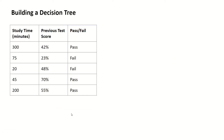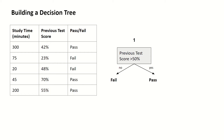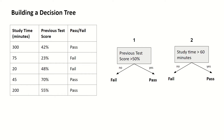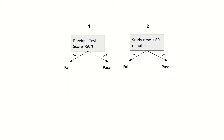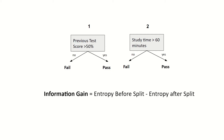So how do we build a decision tree? Let's take a look at two simple decision trees. First: do they have a previous test score larger than 50%? If yes, they pass; if no, they fail. And for the second decision tree: do they have a study time larger than 60 minutes? If yes, they pass; if no, they fail. In order to figure out which of these decision trees is better, we can look at what's called information gain, which is calculated by the following formula: information gain equals entropy before the split minus entropy after the split.